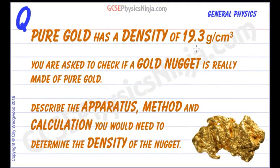Pure gold has got a density of 19.3 grams per centimeter cubed and we're asked to check if a gold nugget is really made of pure gold. So we need to describe the apparatus, method and calculation that would give us the density of the nugget. And if it's 19.3 or thereabouts we have a pretty good idea that it should be pure gold.